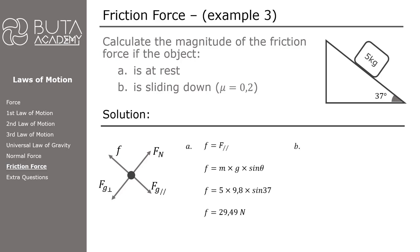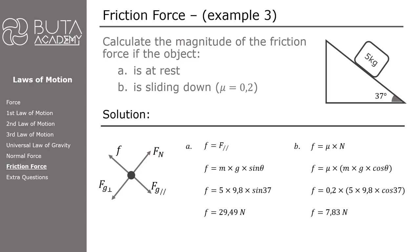On the other hand, if the object is in motion, the friction force is kinetic. We calculate kinetic friction force by multiplying the coefficient of friction by the normal force. On an inclined plane, the normal force equals m × g × cos θ. With μ = 0.2, m = 5 kg, g = 9.8 m/s², and θ = 37°, the kinetic friction force is 7.83 newtons. Splitting this question into two parts helped us recognize that different formulas apply for each case. In exams it is our responsibility to determine whether the object is at rest — experiencing static friction — or in motion — experiencing kinetic friction.